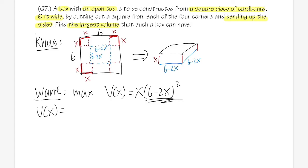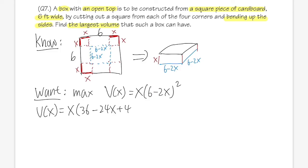Let's multiply this out. We have x at the front, then 6 squared is 36, minus the middle term: 2 times 6 times 2x gives negative 24x, and lastly 2x squared gives plus 4x squared. Distributing the x, we get 36x minus 24x² plus 4x³.